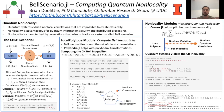In the left column, we consider nonlocal quantum correlations in a bipartite Bell scenario known as a CHSH scenario. The two black boxes named Alice and Bob have binary inputs X and Y respectively and binary outputs A and B respectively.